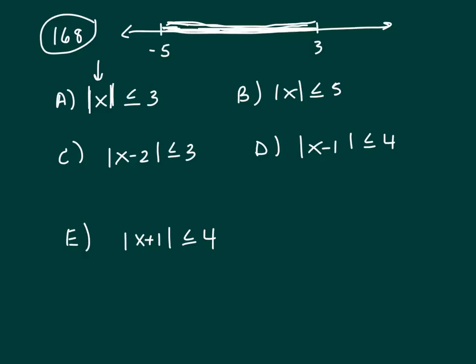What about 0? Absolute value of 0 is 0, so that would work. What about negative 1? Absolute value of negative 1 is 1, and 1 is less than or equal to 3.